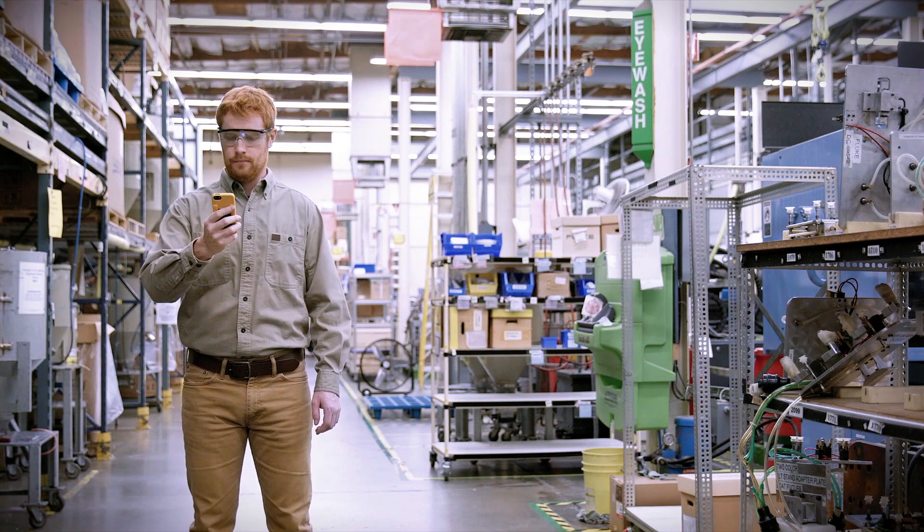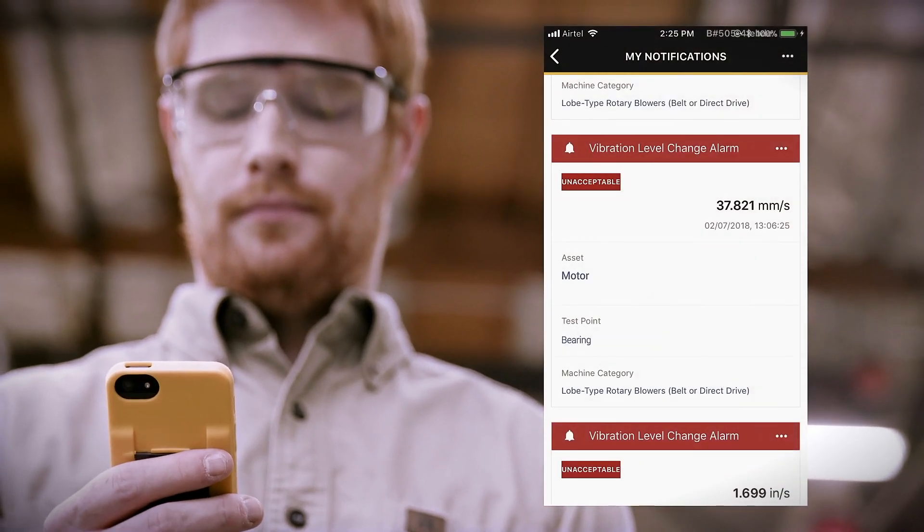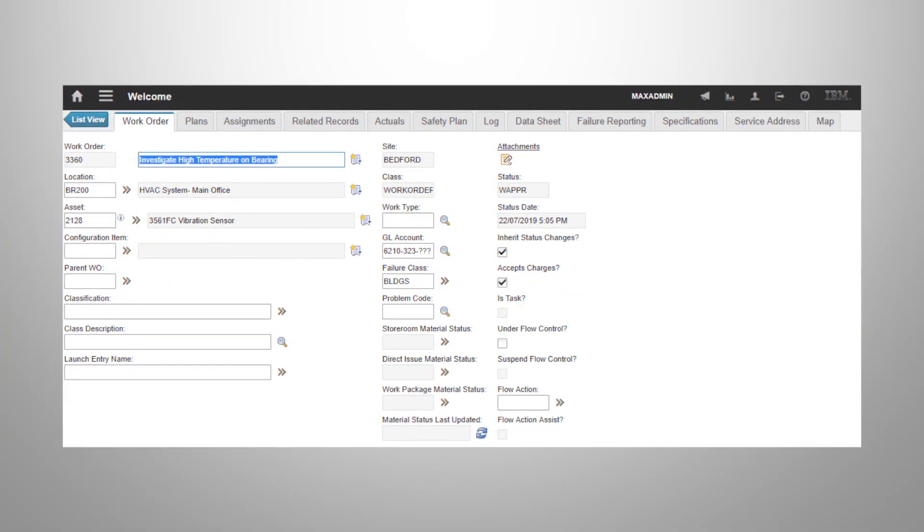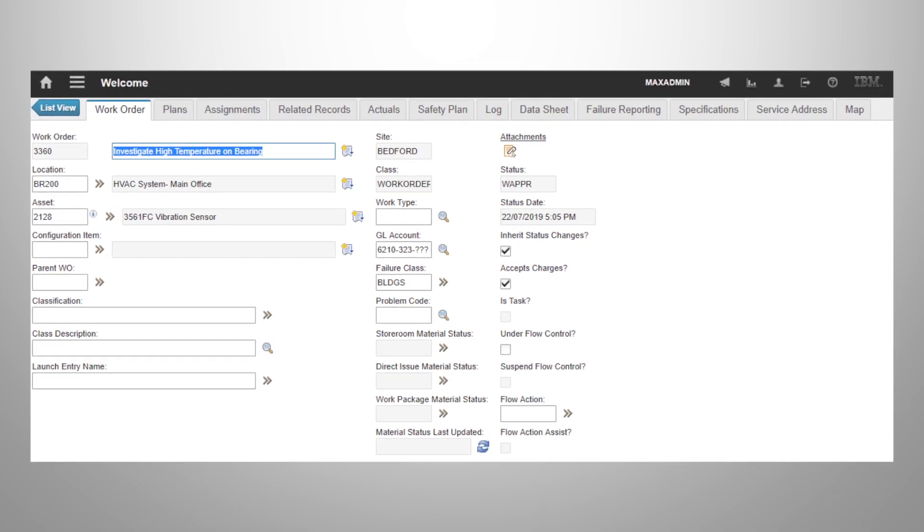Receive notifications of potential failures when equipment conditions move outside user-defined thresholds. Alarms trigger automated work orders, which then prepare the maintenance team to plan for repair or replacement.